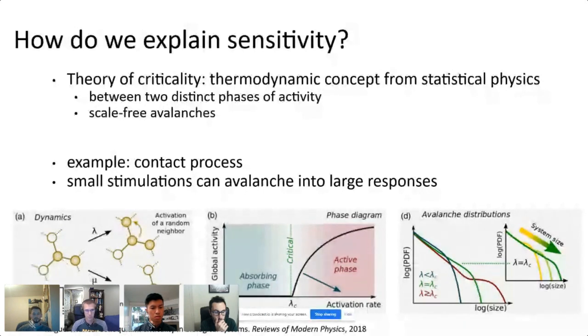If lambda is really small then activity will just die out everywhere and you have what's called an absorbing phase. But if lambda is really large then the activity will dominate and you have an active phase. So those are our two phases. And if you're poised right between them, then that's criticality. When you analyze the avalanche activity right there you see a power law, which is a scale-free function.